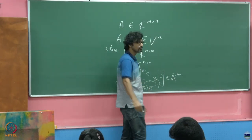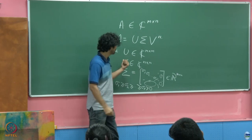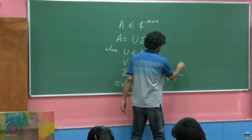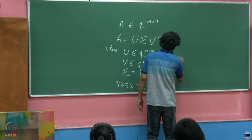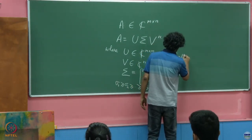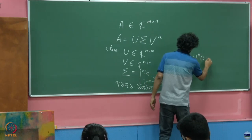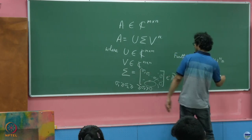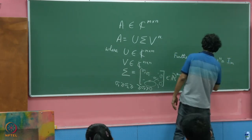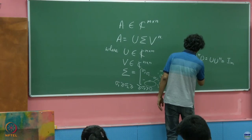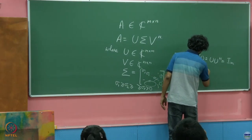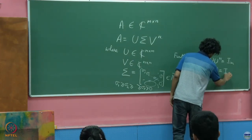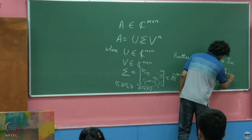What can we say about U? These are unitary matrices, which is to say that U^H U = I of size m, and V^H V = I of size n.